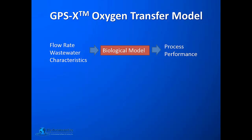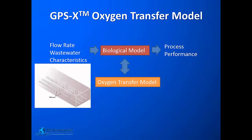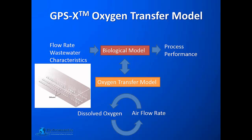Typically, models handle oxygen transfer in the biological model by including an oxygen transfer model that allows the user to either specify a set dissolved oxygen concentration in the aeration tank — which helps determine the air flow rate — or specify the air flow rate from which the dissolved oxygen concentration can be calculated. In this model, we are not modeling any of the head losses that may happen in the air delivery system.